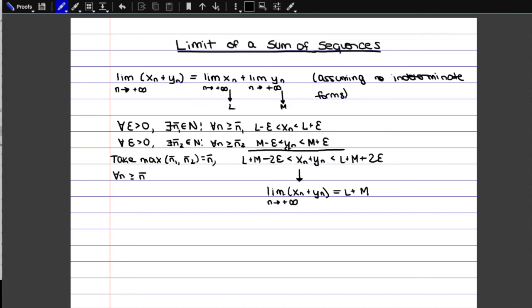So in general, anytime you have a proof with two sequences at the same time, you're going to have to mention that you do this, that you take the highest of the two, the maximum. And then we're going to take all the n's after that. So this proof is one of the simpler ones. And yeah, you just need to know the definition of convergence and just literally add together the two inequalities.